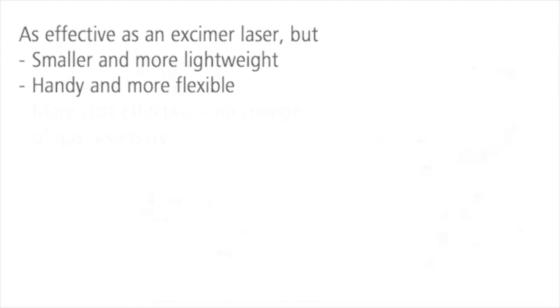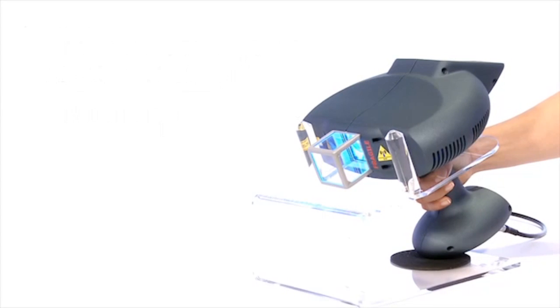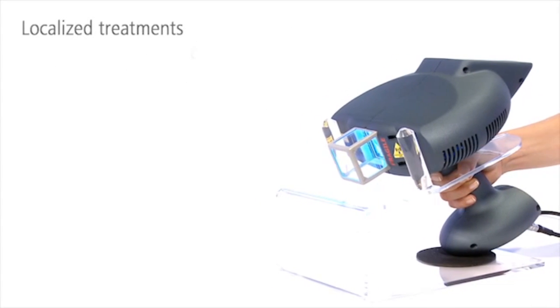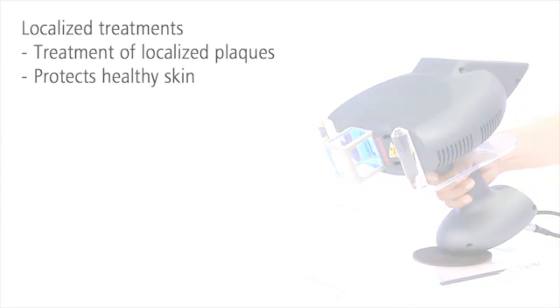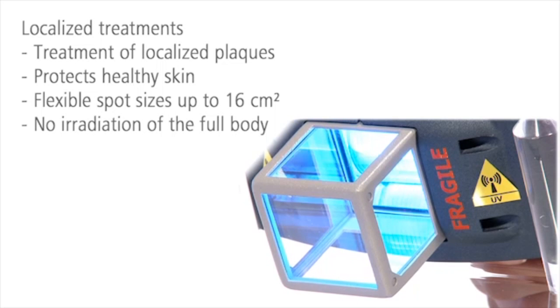With comparably low acquisition and operating costs, it is also more cost-effective. The handy excimer system targets lesions precisely and powerfully. For example, you can apply the 16 square centimeter spot on localized psoriasis plaques on the elbow and leave healthy skin unexposed.